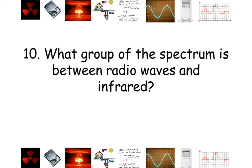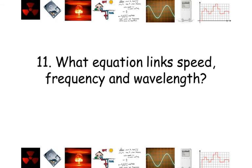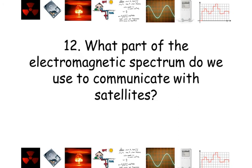Question number ten: what group of the spectrum is between radio waves and infrared? Question number eleven: what equation links speed, frequency, and wavelength? Question number twelve: what part of the electromagnetic spectrum do we use to communicate with satellites?